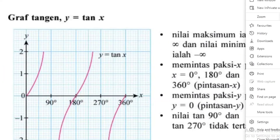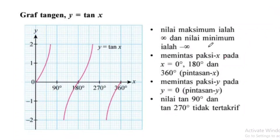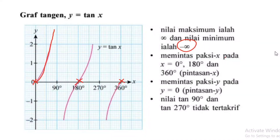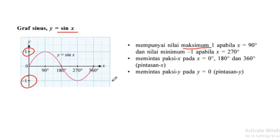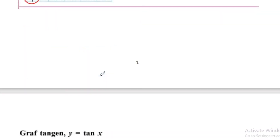Graf tangent ni dia special sikit. Nilai maksimum dia infinity — kita tak tahu dia boleh pergi sampai berapa. Dia tak sentuh pada 90 darjah. Memintas paksi X pada X sama dengan kosong, 180, dan 360. Nilai maksimum ialah infinity, nilai minimum pun infinity juga. Pelajar kenal pasti 3 graf ini.